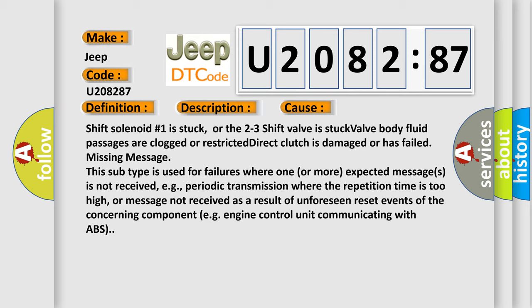This subtype is used for failures where one or more expected messages is not received, e.g., periodic transmission where the repetition time is too high, or message not received as a result of unforeseen reset events of the concerning component, e.g., engine control unit communicating with ABS.